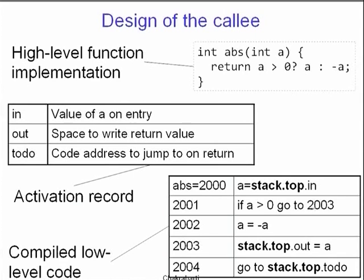At instruction 2002, you flip the sign of register A. At 2003, we write the resulting value to stack.top.out. At 2004, you change the PC by going to the to-do field of the table. The program is changing the local A — that is, a register. That register is changed, negated, and that negative value is written out to the top of the stack. The caller's value is not changed; you are only finding either A or minus A and returning it from abs.